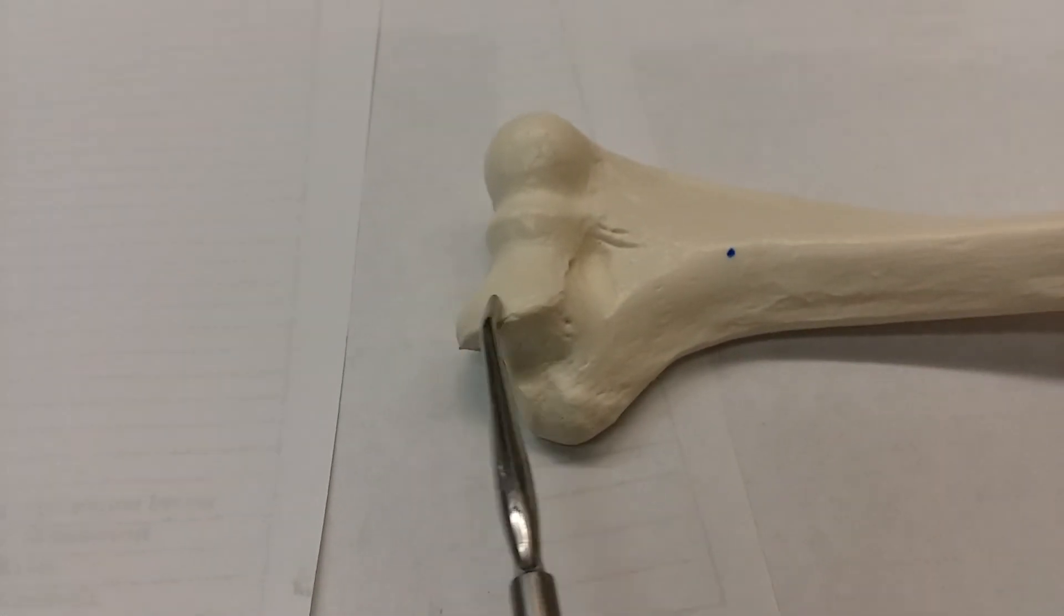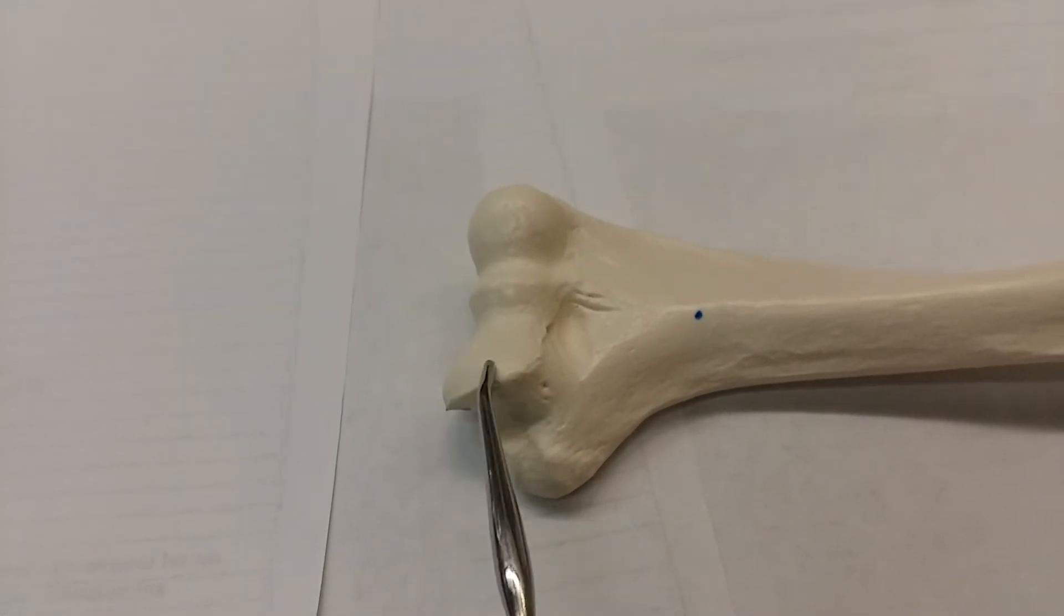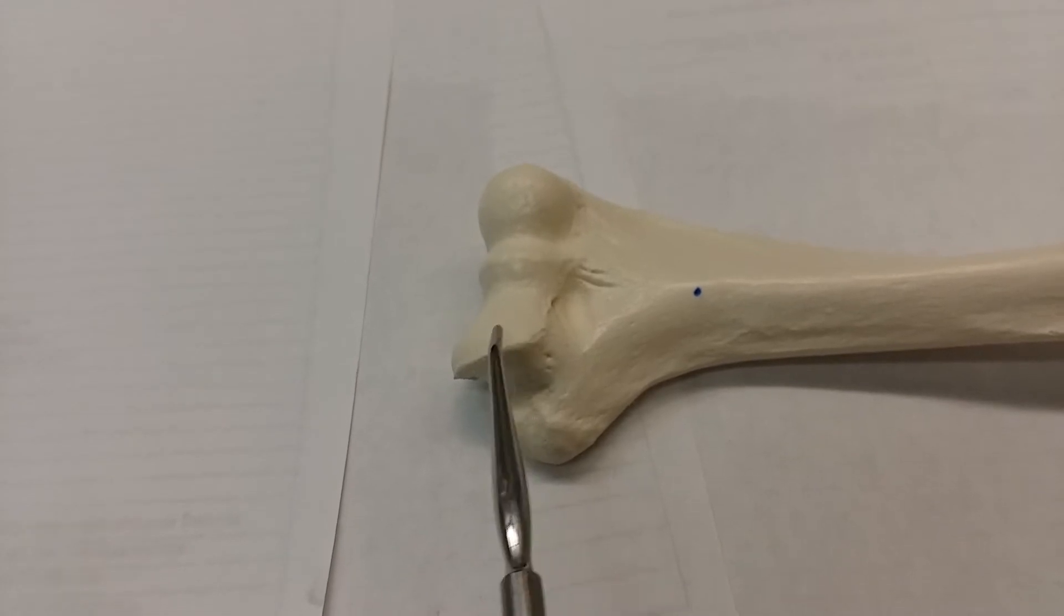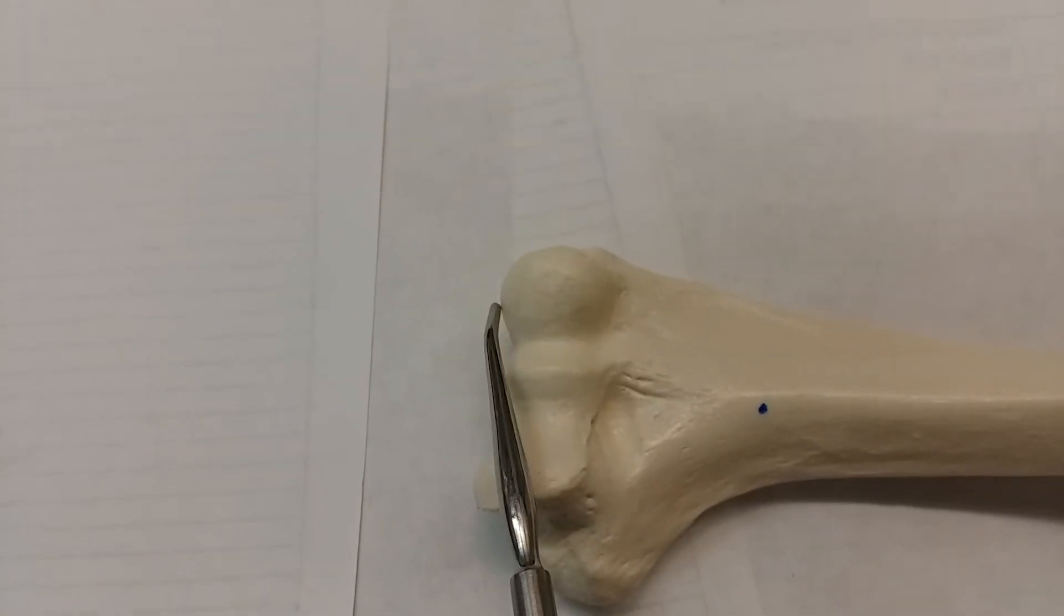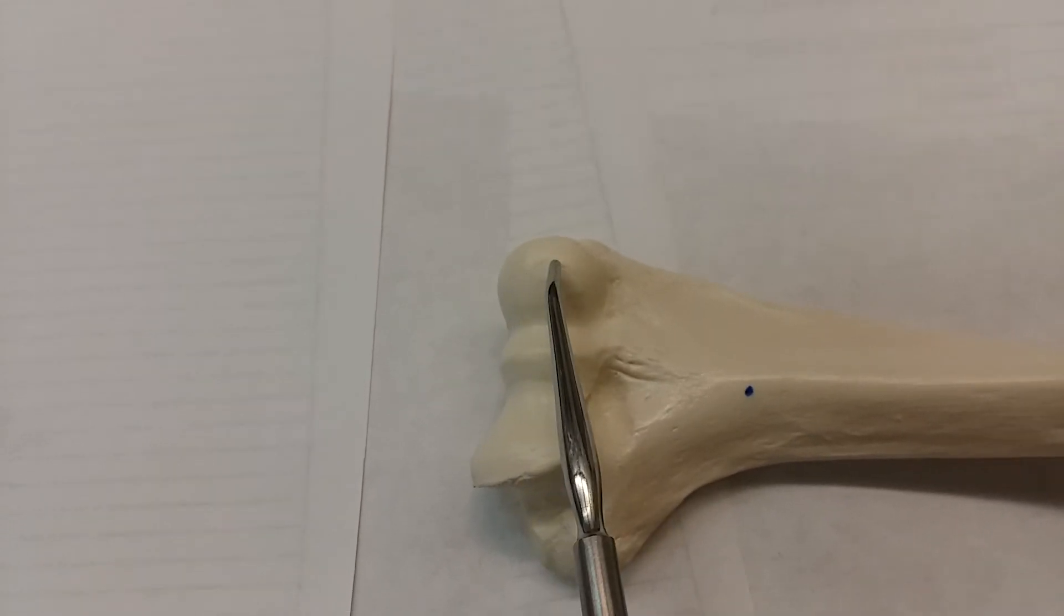Down here, this area looks like a plow on the field. This is called a trochlea. Over here, this rounded portion, is called a capitulum.